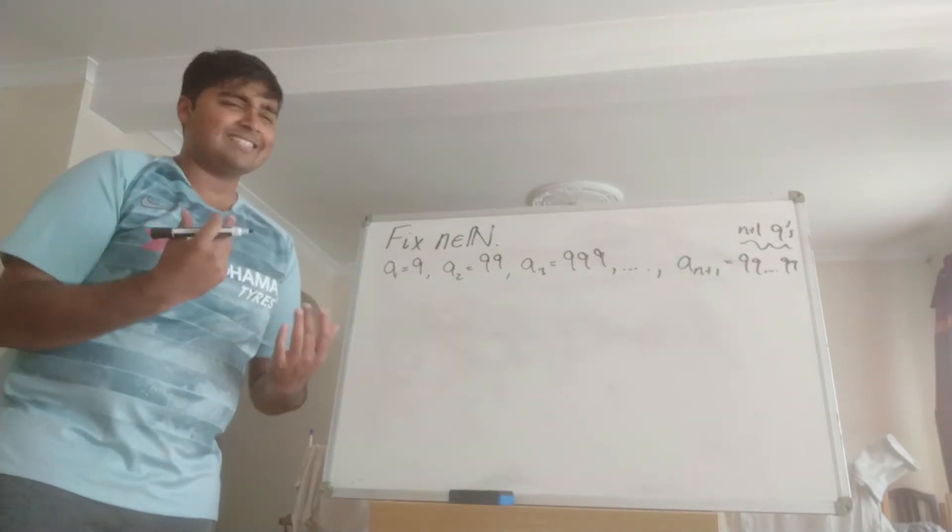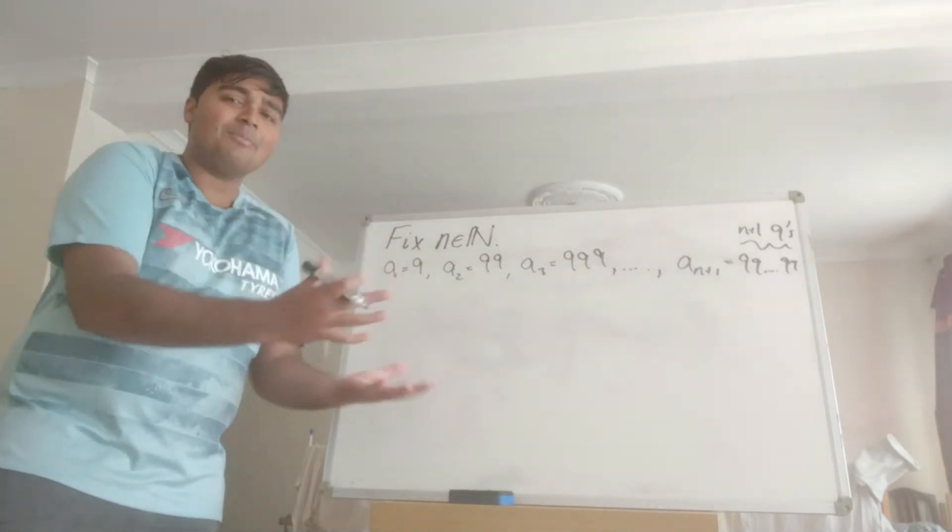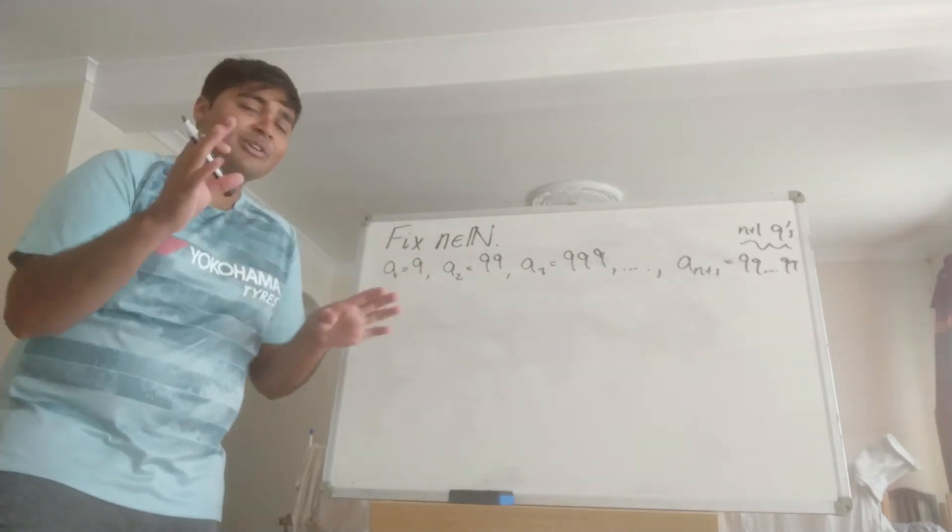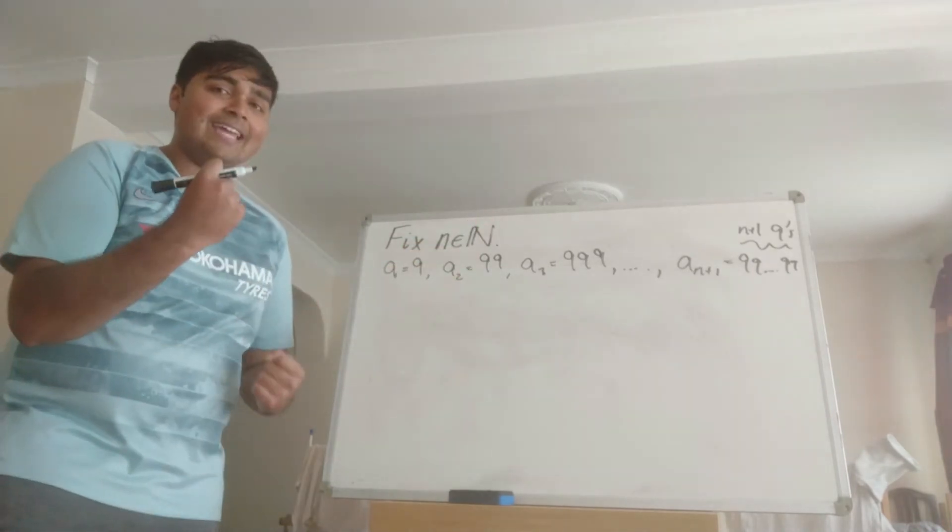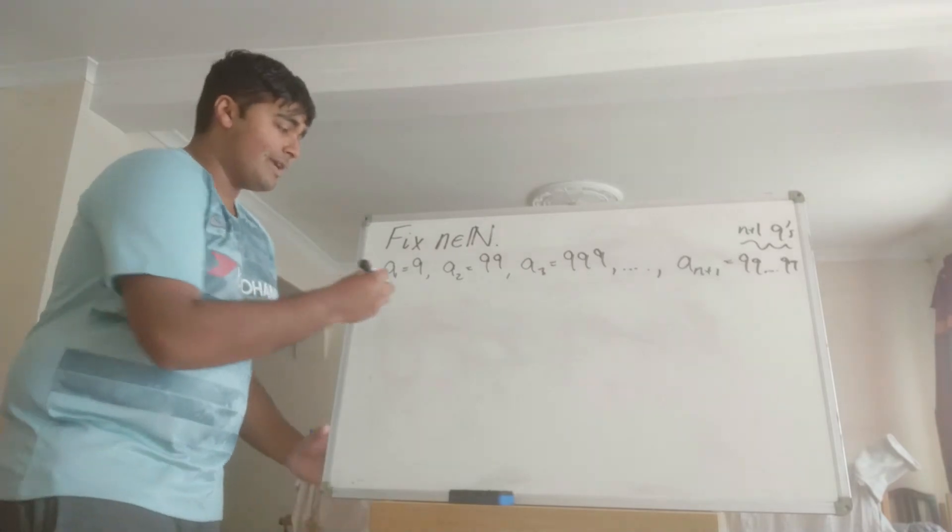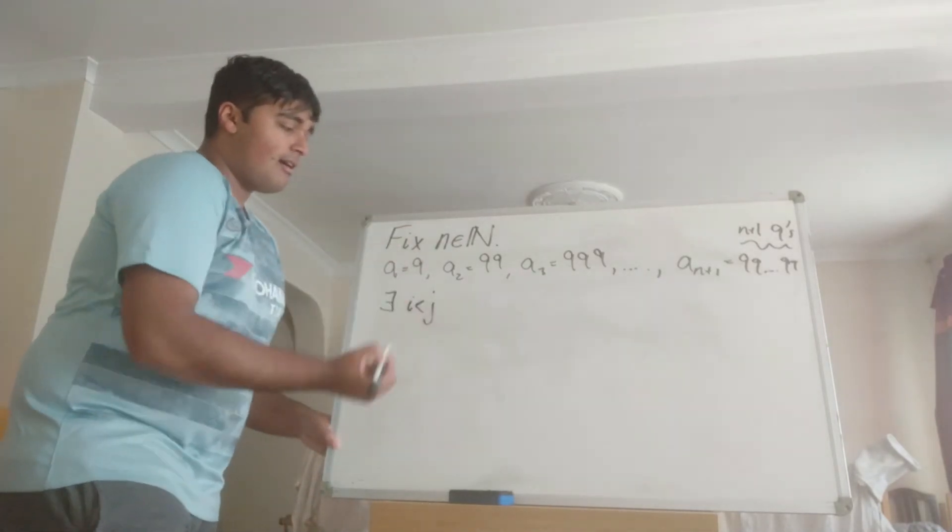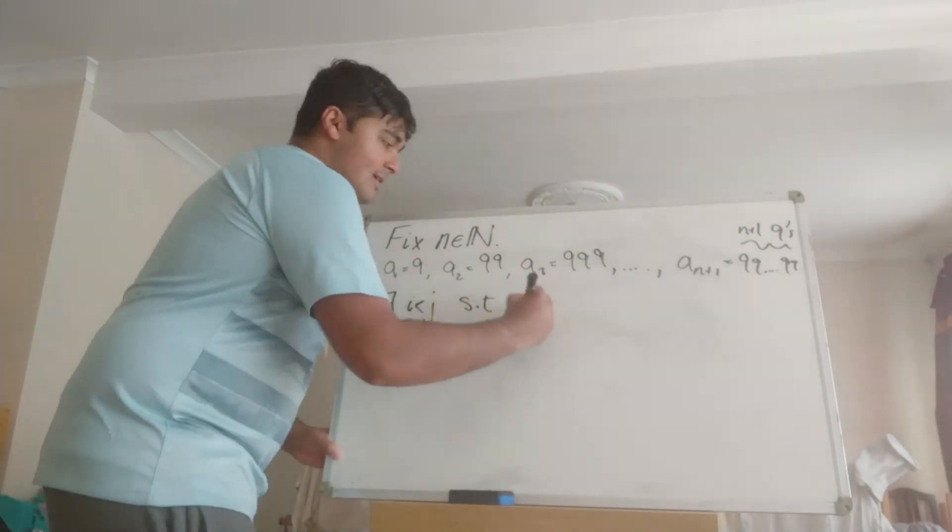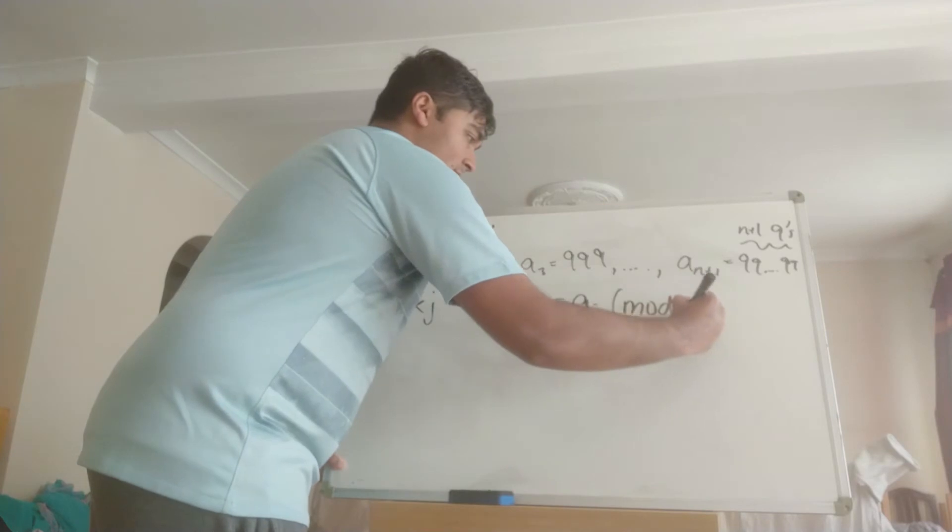So if that doesn't make any sense, I don't think I explained it too well, but it all falls from the pigeonhole principle. So if you've not heard of that before, go and look it up. But yeah, this is because of the pigeonhole principle. There must be some ai and aj distinct, such that ai is congruent to aj mod n. So there exists, and I'm going to say without loss of generality, i less than j, such that ai is congruent to aj mod n.